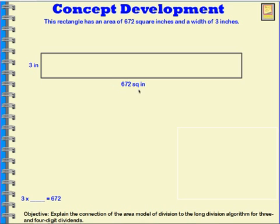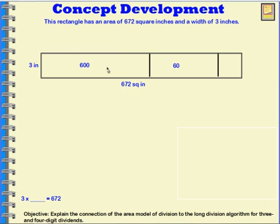So what I can do is I can break this 672 down. I can think about 672 in unit form. When I break 672 down, I'm going to break my rectangle down. I'm going to say this part of the rectangle could be represented with the 600s. That would leave me with 72. When I think about 72, I know that 60 is in there, so this part of the rectangle I'm going to represent as 60. The area of this section is 600 square inches, this section is 60 square inches, and this section is 12. 600 plus 60 plus 12 is 672.